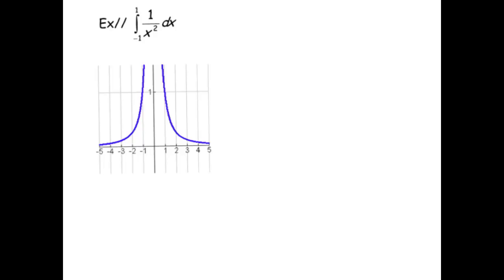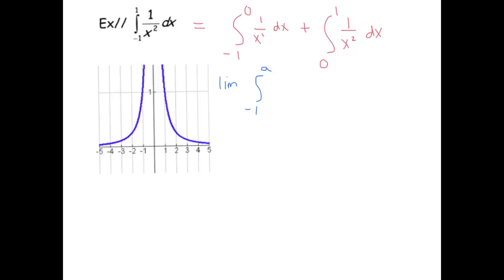Now let's look at one where the infinite discontinuity happens in between the two limits of integration. What we're going to do is break up this integral at the point of discontinuity. The discontinuity is at zero. So let's write this as the integral from negative one to zero of one over x squared, and add that to the integral from zero to one. We need to be careful here — some students get this wrong. I'm writing this as the integral from negative one to a, and letting a go to zero from the left-hand side.